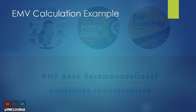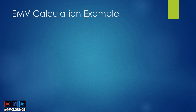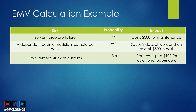In this example table we have three risks. Risk one is server hardware failure — the probability of this risk materializing is 15%, and if it does you will have to pay $300 for maintenance. Risk two is a dependent coding module being completed early — the probability is 8%, and if this happens it will save two days of work and $500 in overall cost.